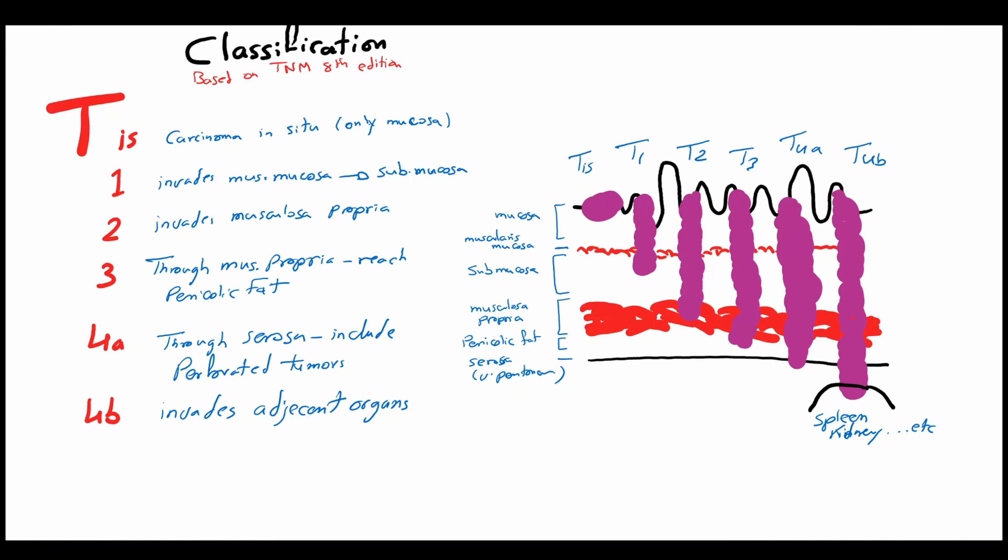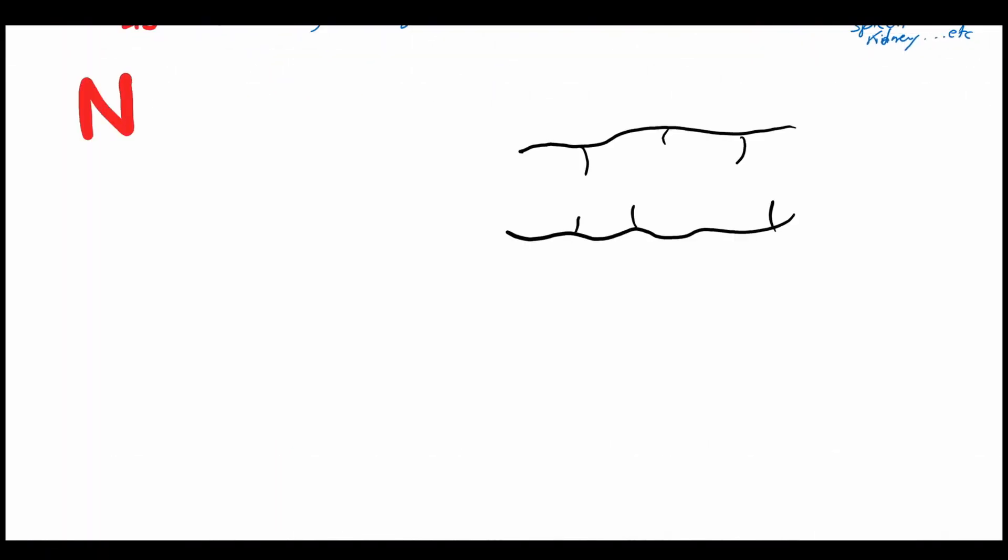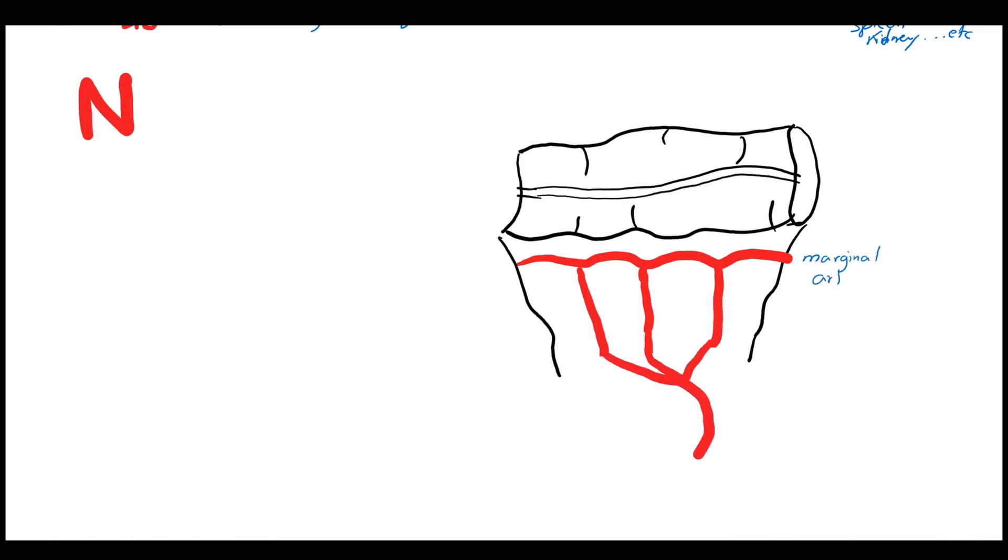Now we will move to the N classification. Here we can see the marginal artery supplied by the vasa recta coming from the colic arteries.